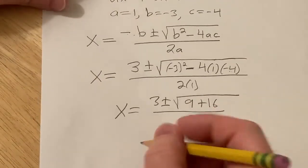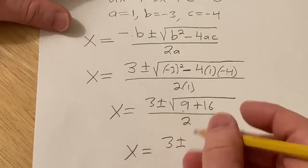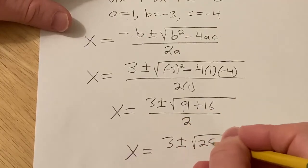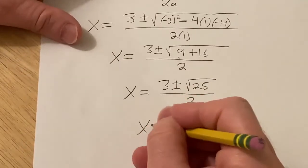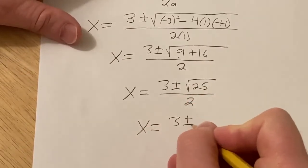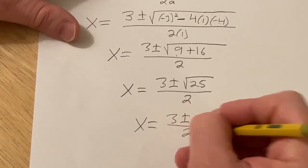Let's keep going, so x is equal to 3 plus or minus, 9 plus 16 is 25, and all of this is over 2. So we have x equals 3 plus or minus the square root of 25 is 5 over 2.